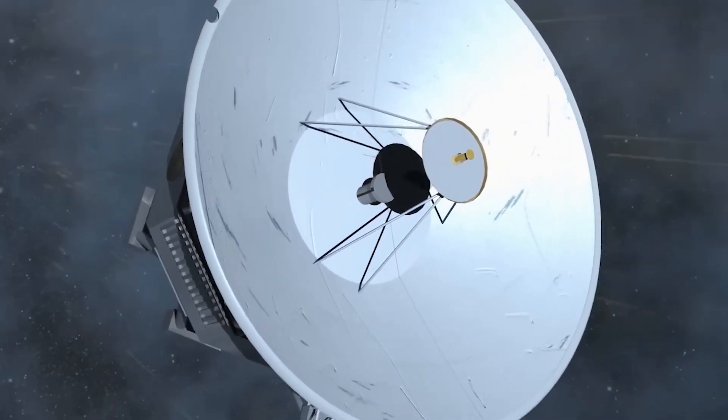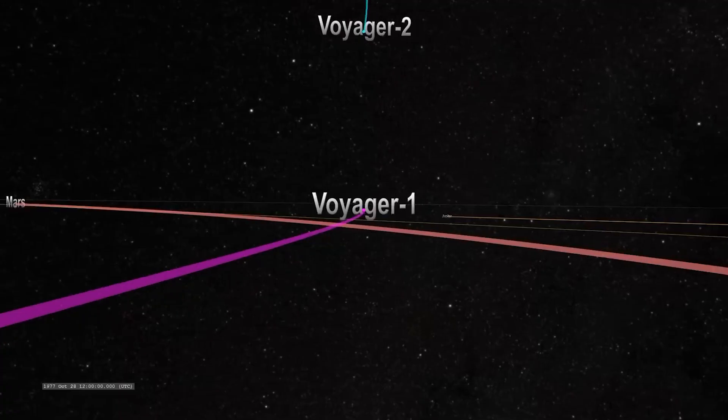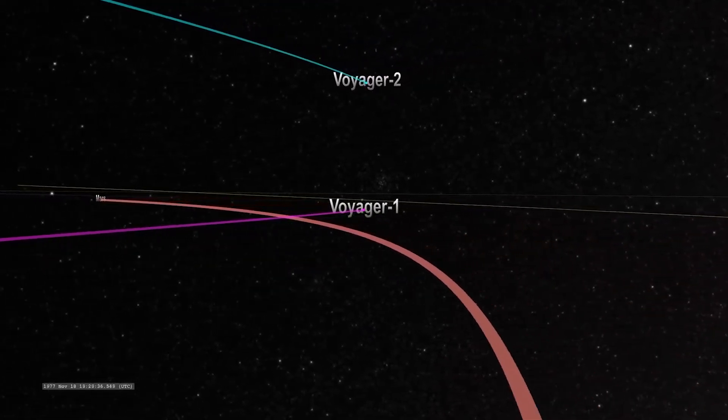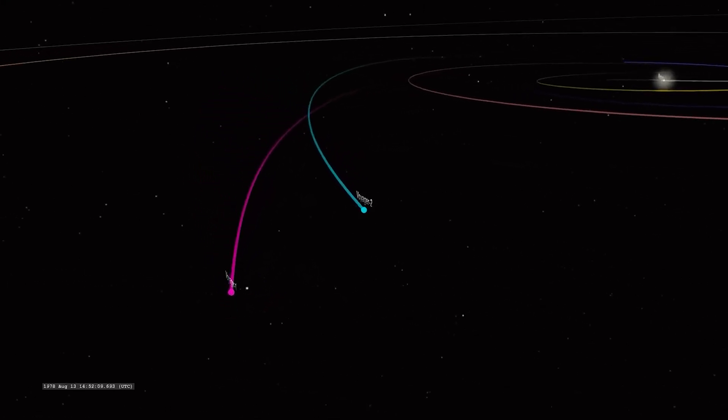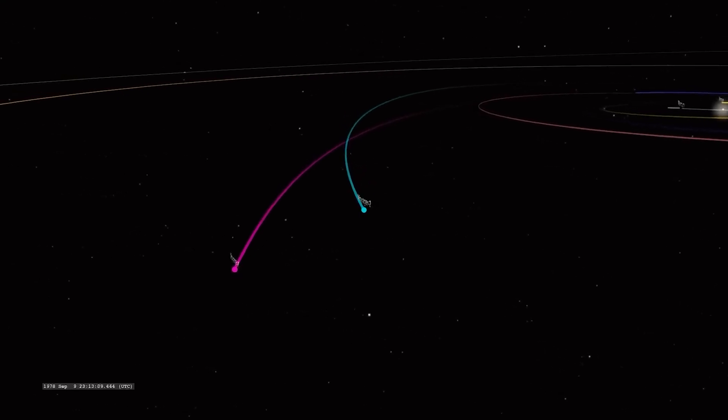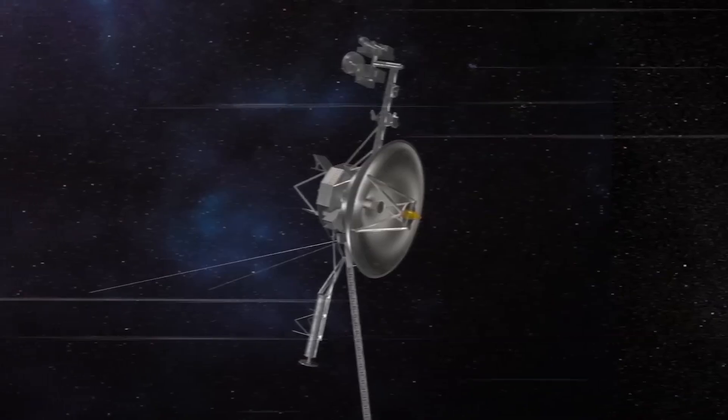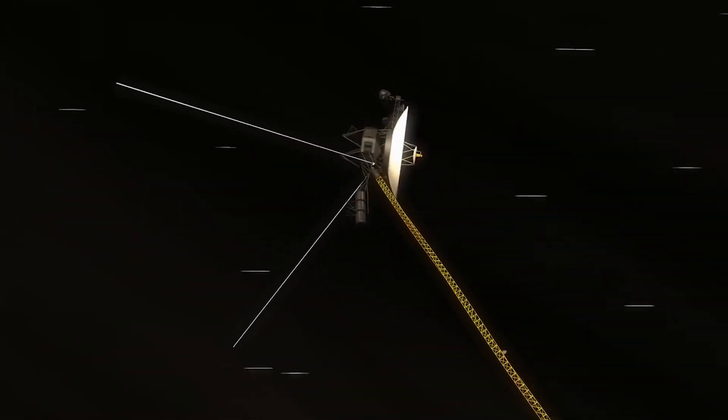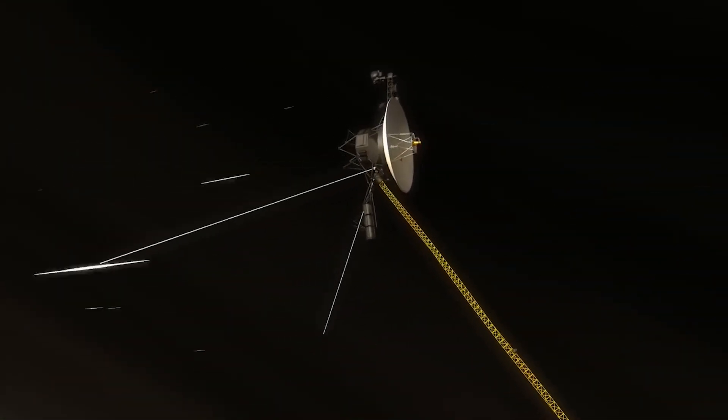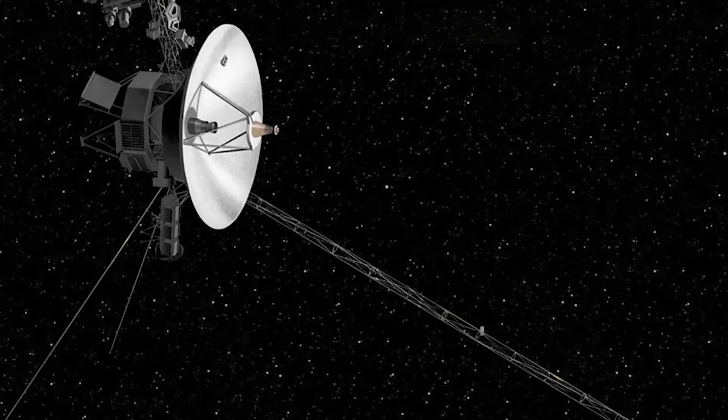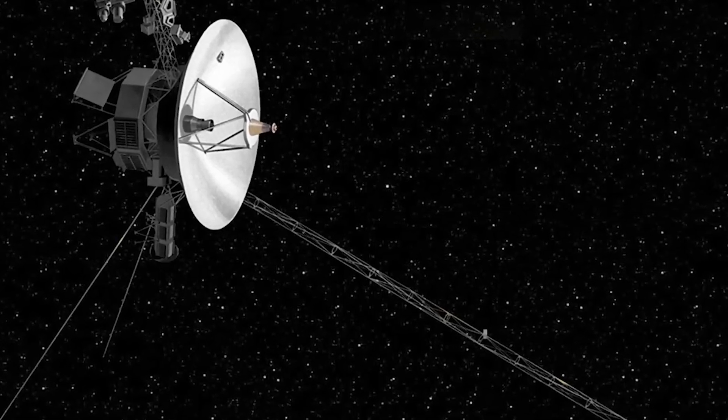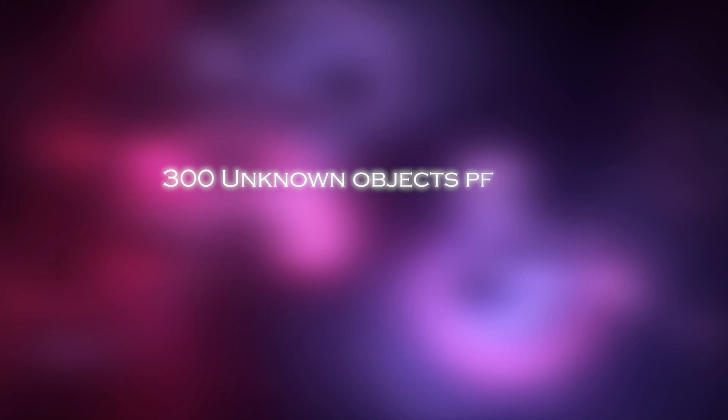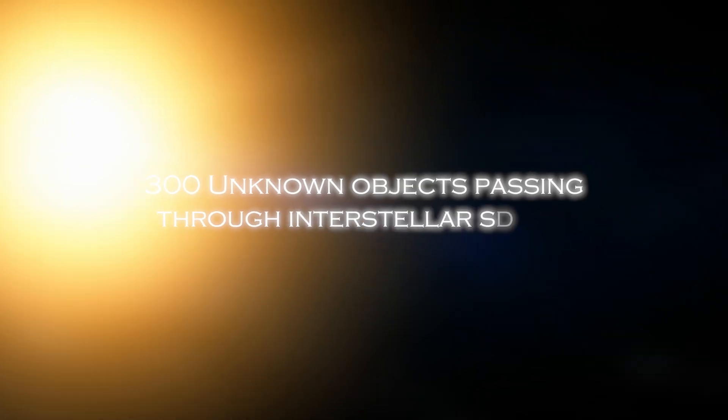However, communication with Voyager 1 has become more difficult due to the limited resources NASA's global antenna system is expected to have to receive the mission signals. This has resulted in less frequent communication opportunities. Despite this, a fascinating discovery recently emerged in the midst of data stream. Voyager 1 detected an intriguing anomaly, the presence of 300 unknown objects passing through interstellar space.